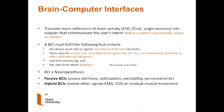That intentional modulation is achieved either by looking at a stimulus on a screen or by imagining movement. The BCI also requires real-time processing — translating brain activity into a control signal in real time — and feedback to allow the person to observe the actions of their imagined movement or their viewing of a stimulus.